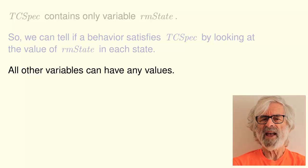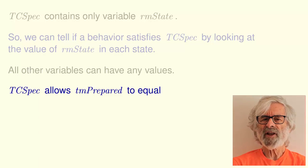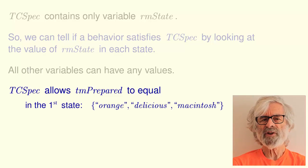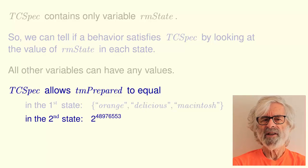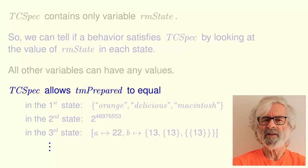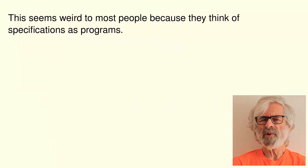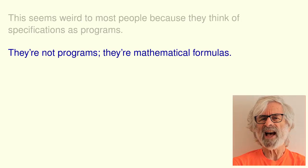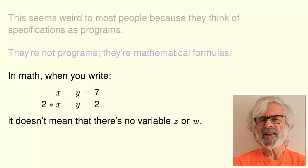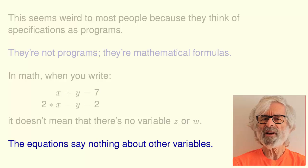All the other variables can have any values in any of its states. For example, in a behavior satisfying formula TCSpec, variable TMPrepared could equal this value in the first state, this value in the second state, this value in the third state, and so on. This seems weird to most people because they think of specifications as programs. Specifications are not programs — they are mathematical formulas. In math, when you write equations like this about the variables x and y, it doesn't mean that there are no variables z or w. The equations just say nothing about those other variables.